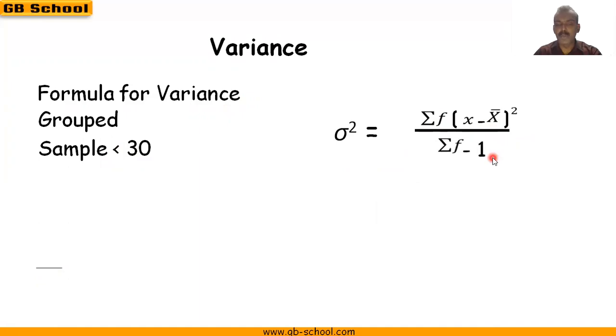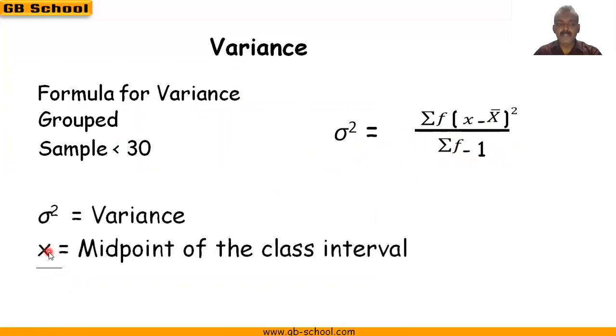In this case, σ² is variance, and small x is the midpoint of the class interval. Capital X is the mean, and f is the frequency.